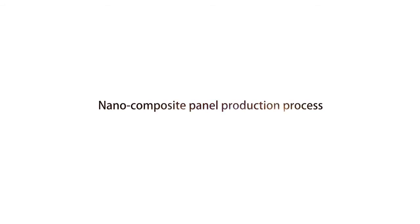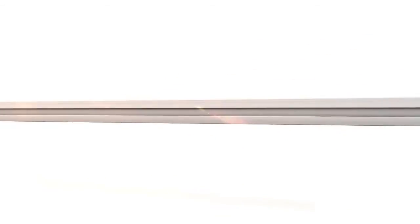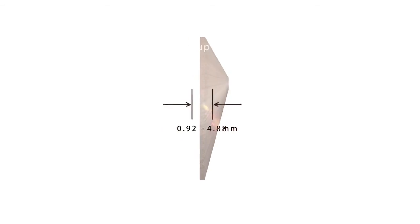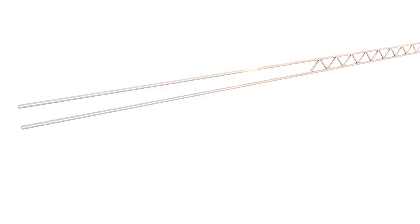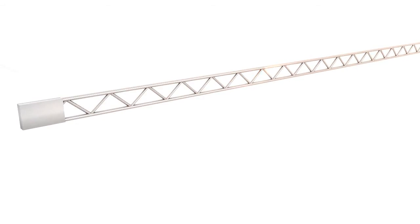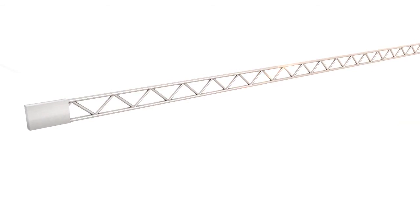Nanocomposite panel production process. First, bend the galvanized steel sheet to the design standards and cut to the right length. The thickness of the galvanized steel sheet is 2.5 to 3 mm. Then, select different galvanized steel wire according to the design to make the truss.